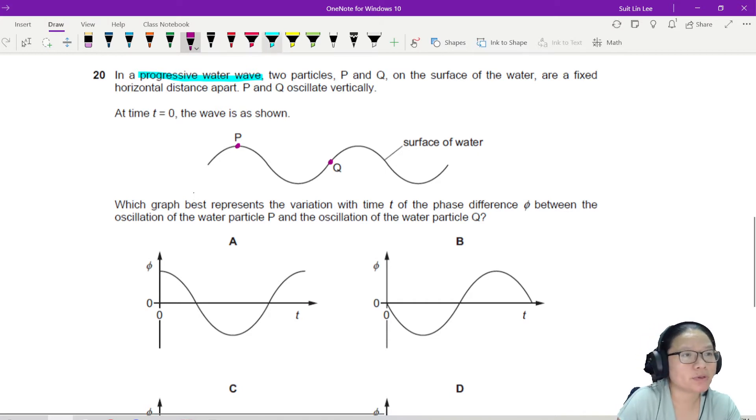And then the important point here is that it is a fixed horizontal distance apart, meaning point P and point Q are fixed, okay? Here.